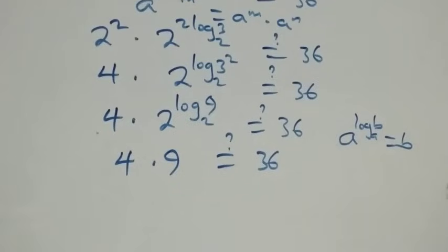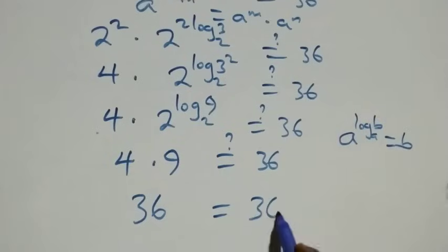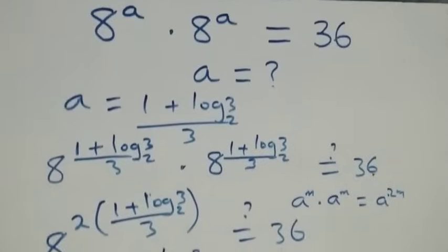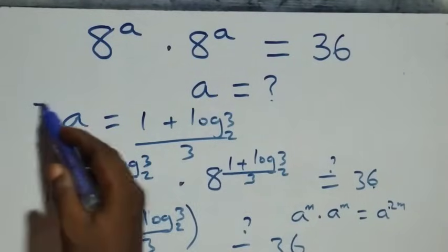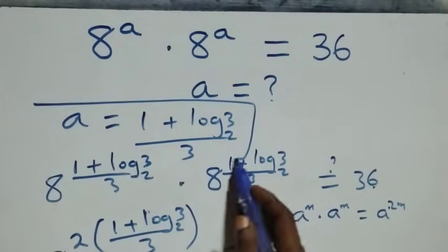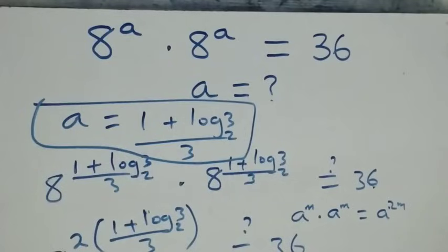Of course 4 times 9 gives us 36, which equals 36 on the right-hand side. The left-hand side equals the right-hand side, and hence we conclude that a equals 1 plus log 3 base 2, all over 3, satisfies this given problem.